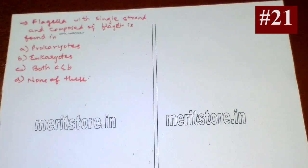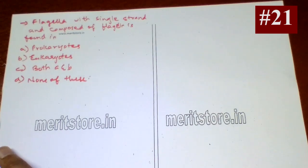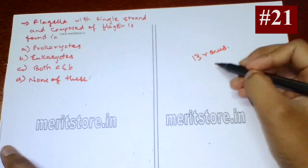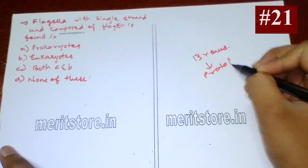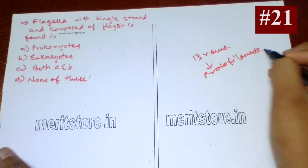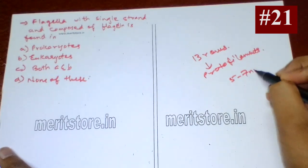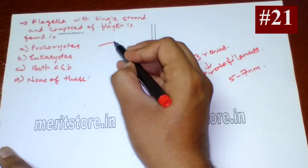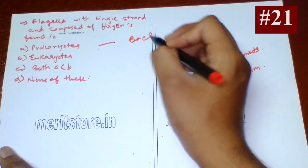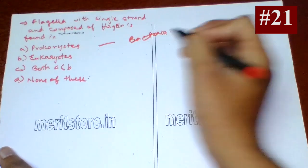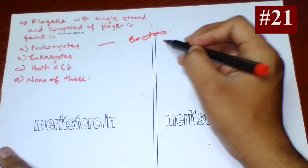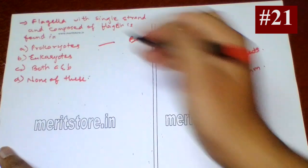Flagella with a single strand composed of flagellin is found in prokaryotes. Microtubules show an array of 13 rows of subunits known as protofilaments, with a diameter of 5 to 7 nanometers. The single-stranded flagella occur in prokaryotes such as bacteria — they contain only a single strand and do not contain the nine-plus-two system. So option A is the correct answer.